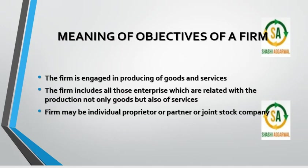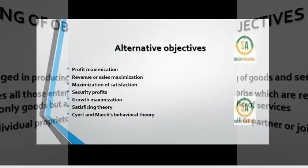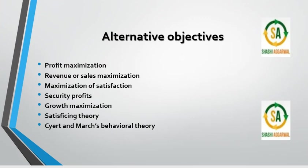A firm can also be one that renders services. The firm can be a sole proprietorship, a partnership, or a joint stock company. I have already covered this in part 1 and the sales maximization in part 2. In this video, we will focus on the maximization of satisfaction.